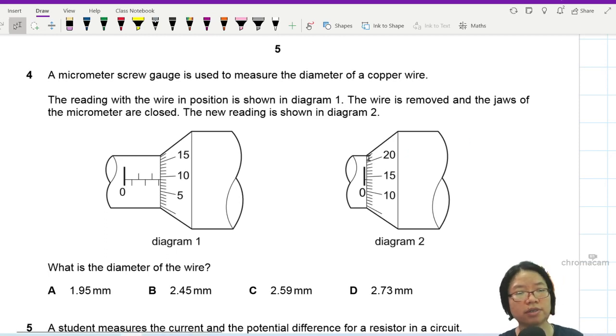Question four. This one, there is a micrometer screw gauge used to measure the diameter of a copper wire. The reading with the wire in position is shown in diagram one. The wire is removed and the jaws of the micrometer are closed.